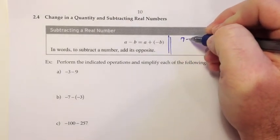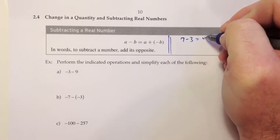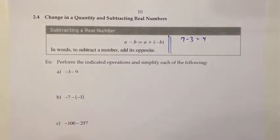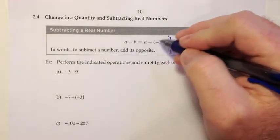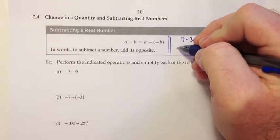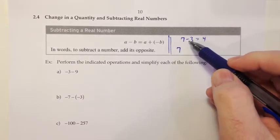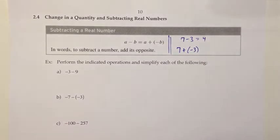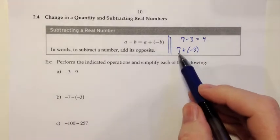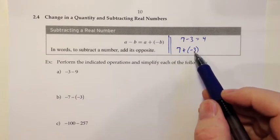I'm going to just show you an example here to show you that that works. If we have something simple like 7 minus 3, we know that's 4. We can do that subtraction because we don't think of it as involving signed numbers. But if we tried to apply this rule anyways, would it work? And the rule says take that subtraction and change it to adding the opposite.